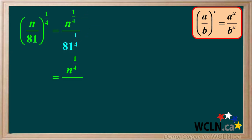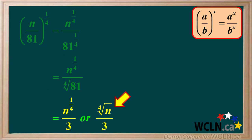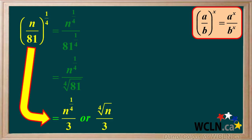81 to the power of 1 quarter is the same as the fourth root of 81, and the fourth root of 81 is equal to 3. So the answer is n to the power of 1 quarter over 3, which can also be expressed as the fourth root of n over 3. So the fraction n over 81 to the power of 1 quarter equals n to the power of 1 quarter over 3.